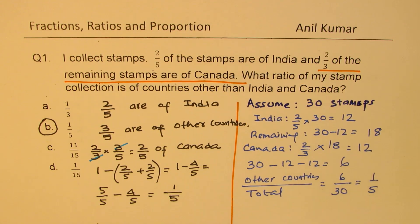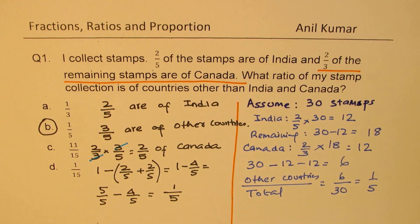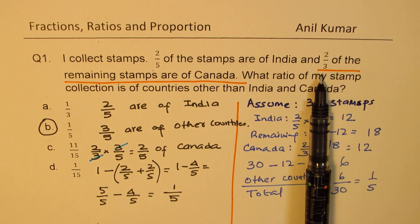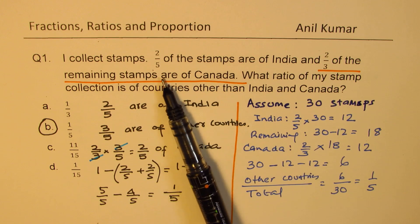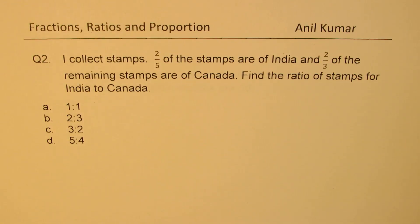That is how we use different strategies to solve ratios and proportions questions, especially when fractions are involved. Try to take a number which is a common multiple of the denominators — that will always help. Now, question number two.